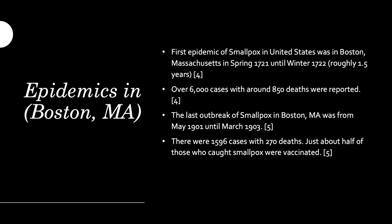Smallpox came to the United States in the spring of 1721, either via a sailor coming from Barbados or through imported goods into colonized America — the research is mixed. It lasted roughly a year and a half until the winter of 1722. During this time, there were over 6,000 cases of smallpox, and of those 6,000 cases, 850 people died.